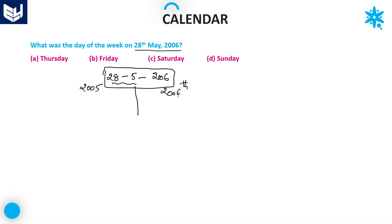The running year is a normal year. Why? Because 2006 is not divisible by 4. Therefore, this is a normal year, so February month consists of 28 days only.